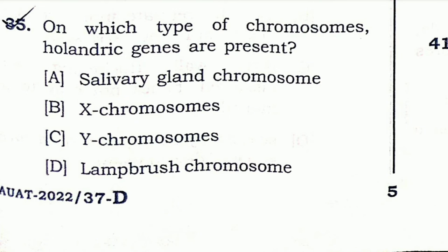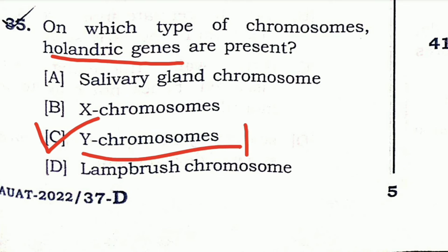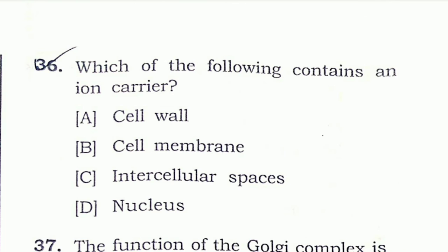Question 35: On which type of chromosome are holandric genes present? The right answer is option C — Y chromosome. Holandric genes are present on the Y chromosome.